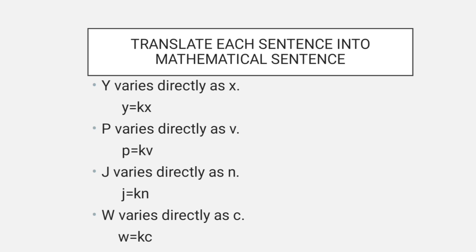Translate each sentence into a mathematical sentence. Y varies directly as X: Y is equal to KX. P varies directly as V: P equals KV. J varies directly as N: J equals KN. W varies directly as C: W equals KC.